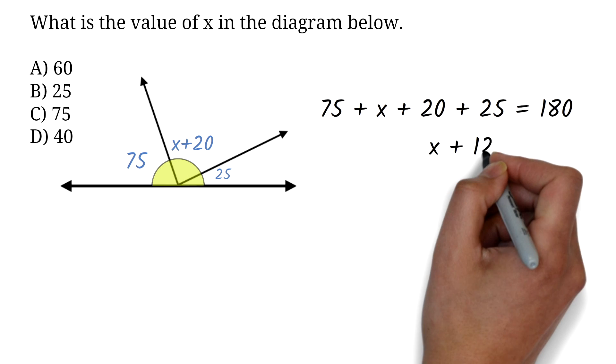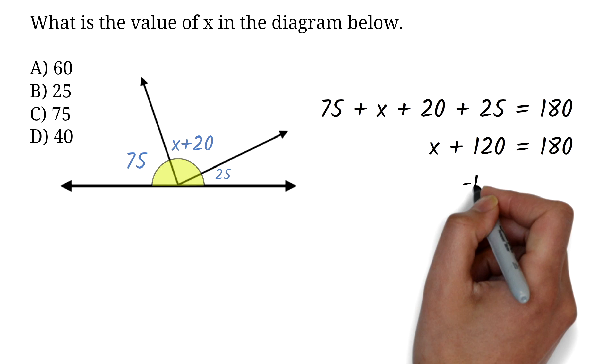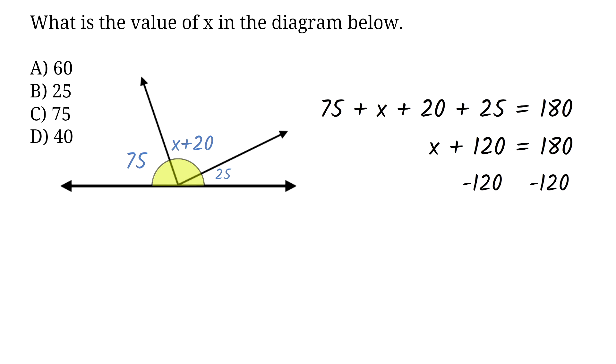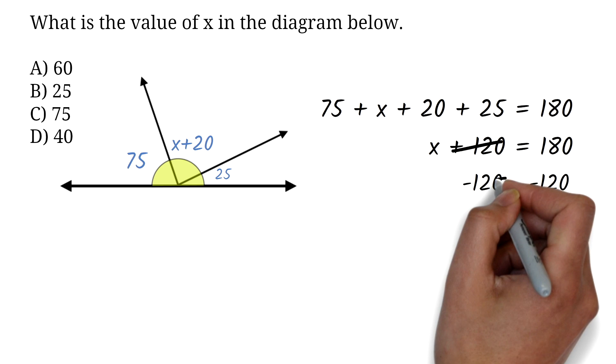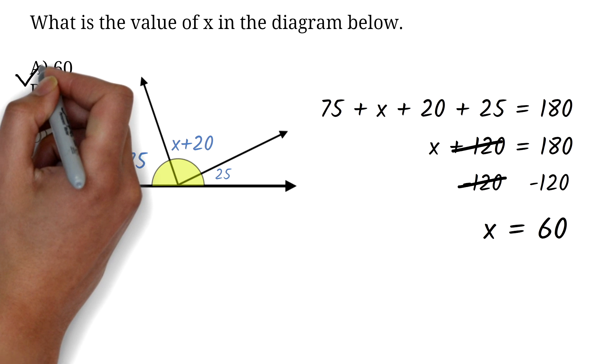So, we have x + 120 = 180. We can subtract 120 from both sides. The 120 will cancel out. 180 - 120 is 60. So, x is 60. Therefore, the correct answer is A, 60.